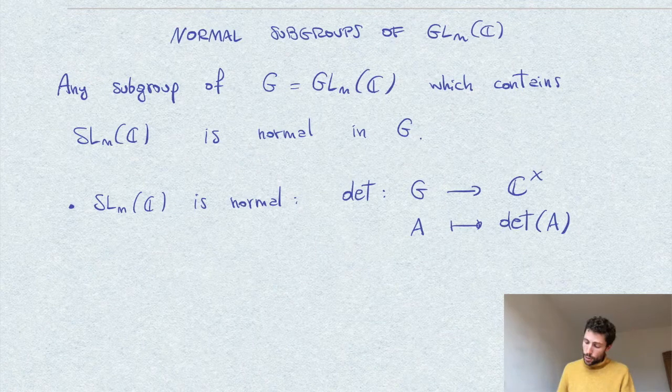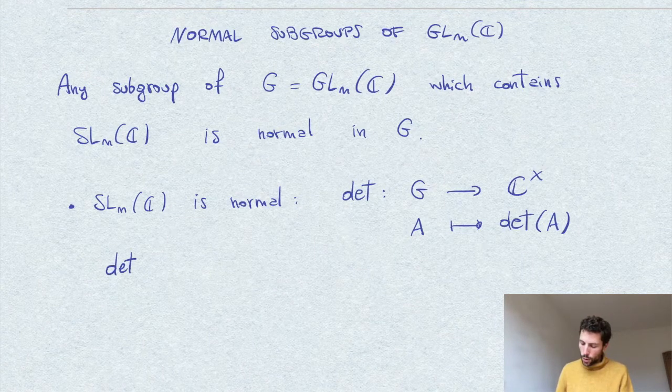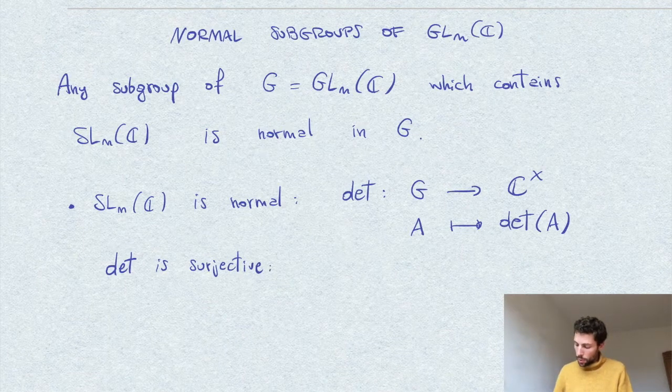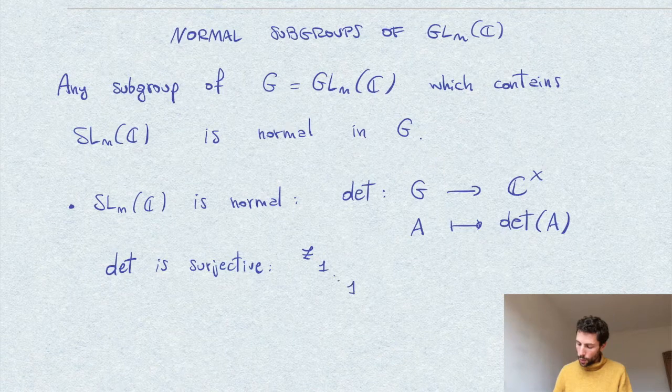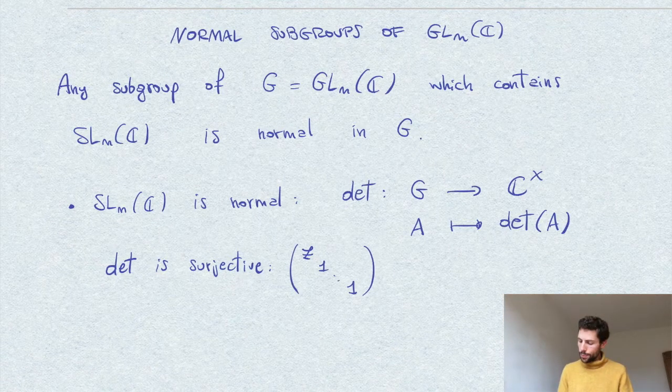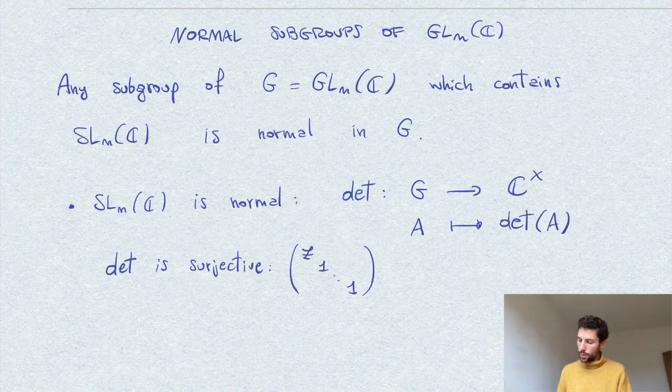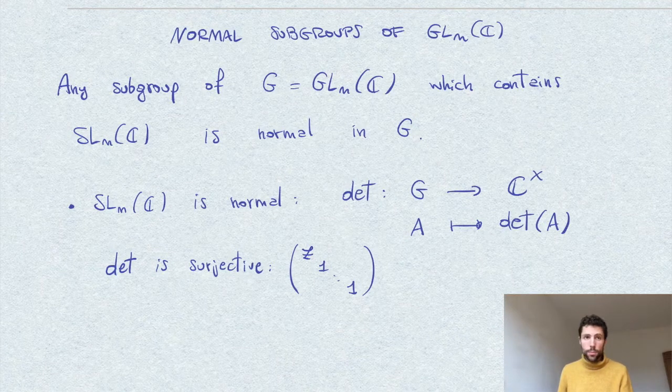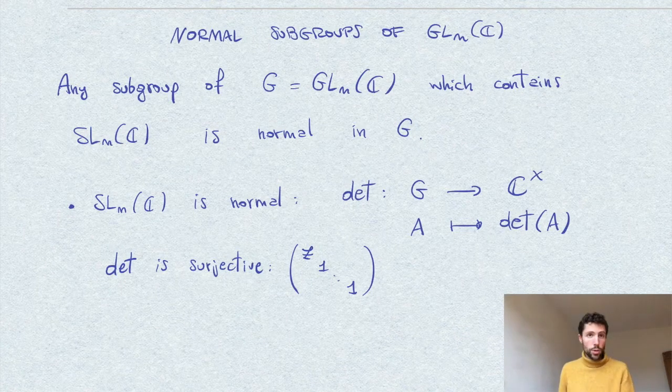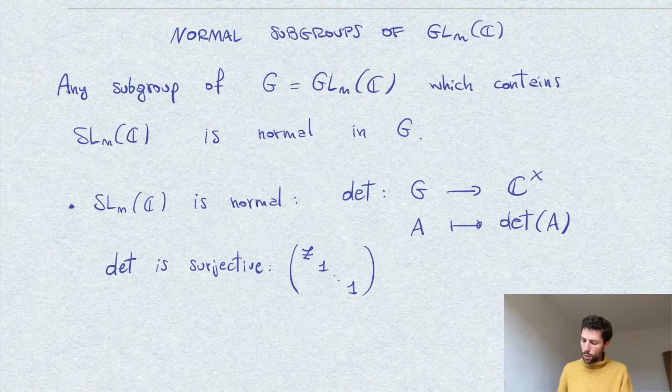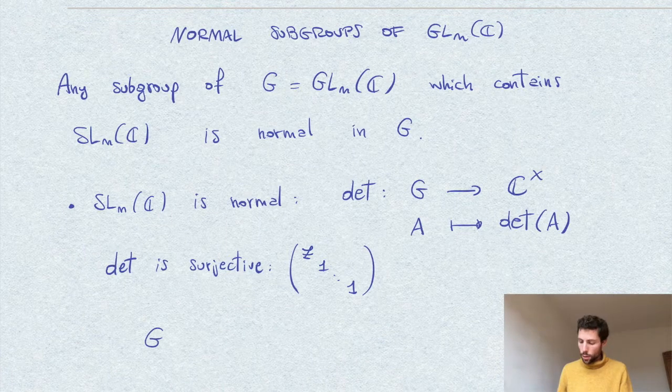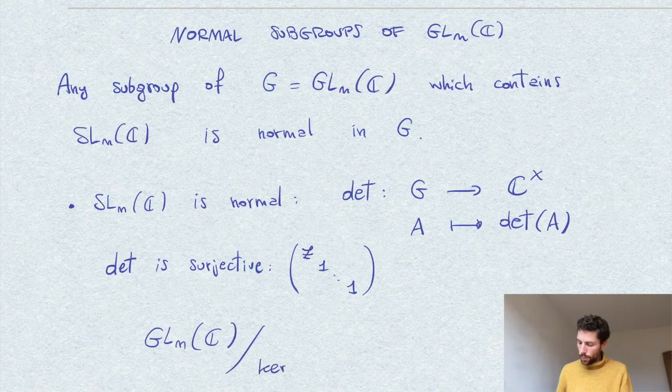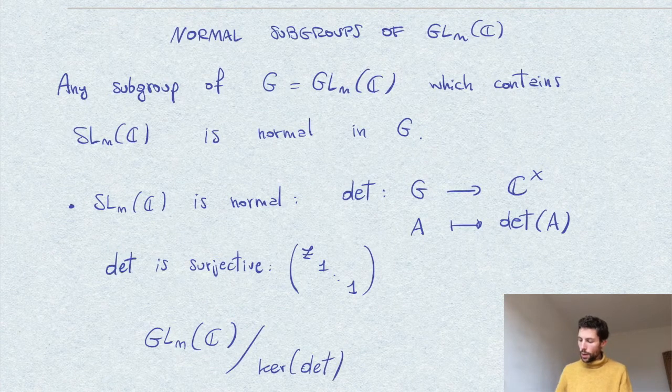So, well, first of all, the determinant map is obviously surjective. Because, for example, if we take the image of matrices of this form for any non-zero complex number, here we get all of C star. And therefore what we have is by the isomorphism theorem or the fundamental theorem of homomorphism of groups, we get that GL_n(C) modulo the kernel of this map is isomorphic to C star.